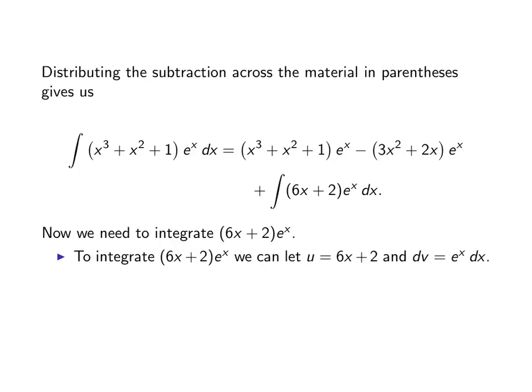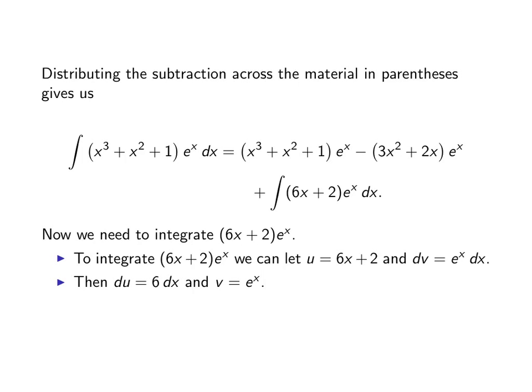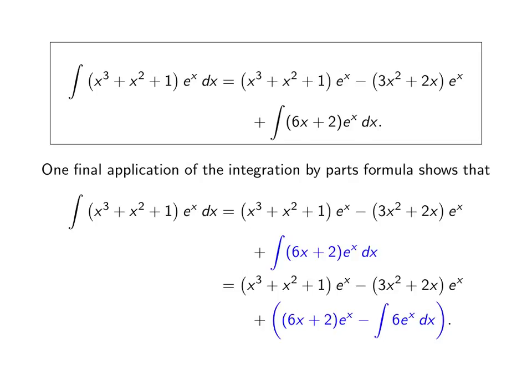Again the integrand is a product, so we use integration by parts once more. We set u equal to the polynomial part 6x + 2 and dv = eˣ dx. Then du = 6dx and v = eˣ. Applying integration by parts gives us u times v — that's (6x + 2)eˣ — minus the integral of v du, which is eˣ times 6dx. So the full expression becomes (x³ + x² + 1)eˣ minus (3x² + 2x)eˣ plus (6x + 2)eˣ minus the integral of 6eˣ dx.